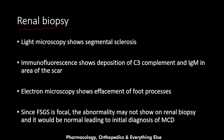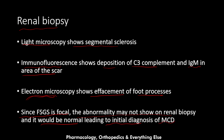On renal biopsy from an FSGS patient, light microscopy shows segmental sclerosis — opposite to minimal change disease where light microscopy is normal. Immunofluorescence shows deposition of C3 complement and IgM antibodies in the area of the scar. Electron microscopy shows effacement of foot processes, same as in MCD. Since FSGS is focal, affecting less than 50% of glomeruli, the abnormality may not appear on biopsy, potentially leading to an initial diagnosis of MCD.